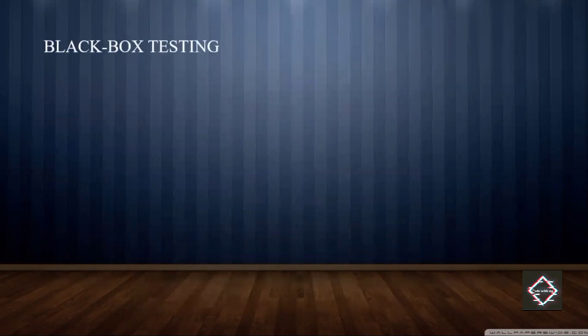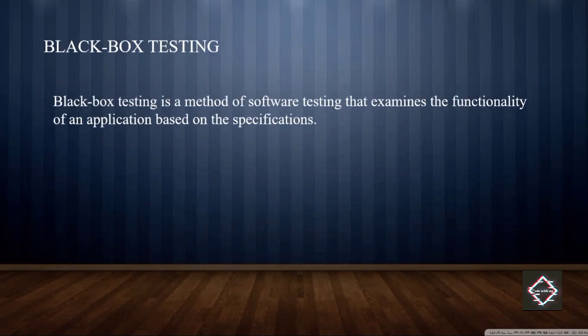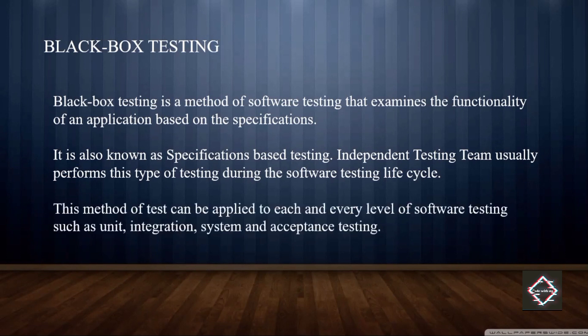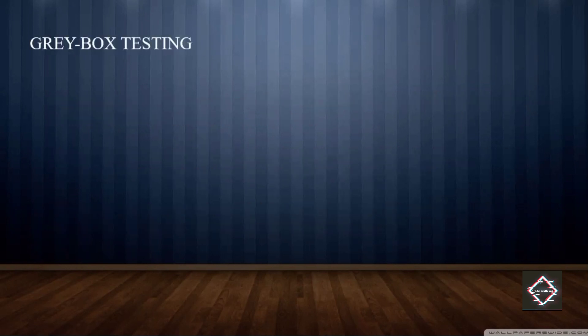Black box testing is a method of software testing that examines the functionality of an application based on its specification. System testing and user acceptance testing come under black box testing, and it is completely done by software testing engineers. It is also known as specification-based testing. The method can be applied to each level of software testing — unit, integration, system, and acceptance testing.